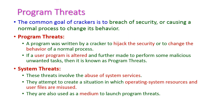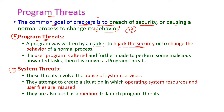Before that, let us discuss something about program threats. The common goal of crackers or attackers is to break the security of a system or cause a normal process to change its behavior. There are two types of threats: the first one is program threat and the second one is system threat. A program threat is a program written by a cracker to hijack the security or to change the behavior of a normal process.